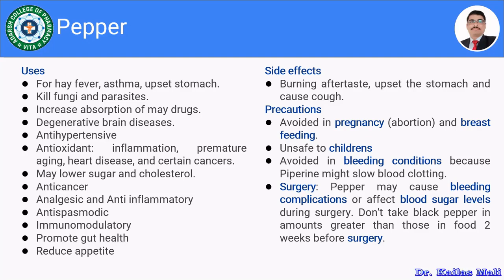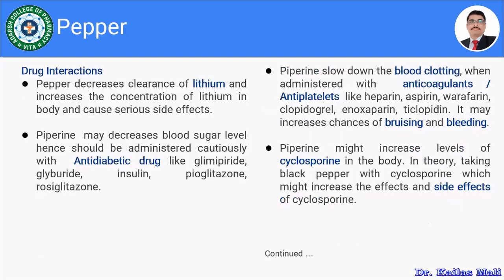Whatever the effects are, it is due to the chemical constituent present in pepper — that is piperine. Maybe you have studied piperine in medicinal chemistry or organic chemistry. Moving towards the drug interactions of pepper. The very first drug interaction is related to lithium. Pepper has the ability to reduce the clearance of lithium. Lithium is a drug used in bipolar disorder. Pepper decreases the clearance of lithium, increases the concentration of lithium in the body, and can cause serious failure.